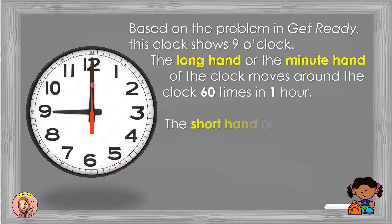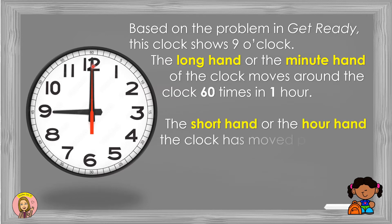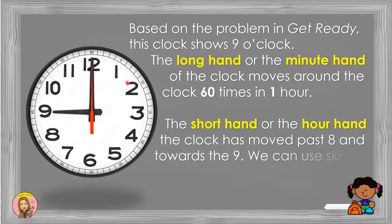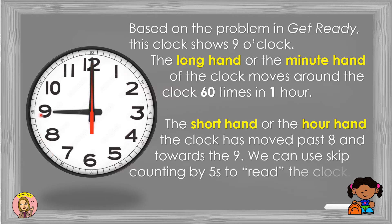The long hand, or the minute hand of the clock, moves around the clock 60 times in one hour. The short hand, or the hour hand, shows the current hour — for example, the clock has moved past 8 towards the 9.